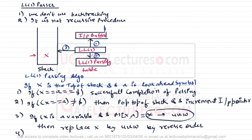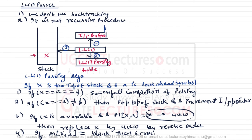Step four: if M[X, a] is blank, then there is an error. For this parsing algorithm we take the help of the LL1 parsing table to parse through the LL1 parser.